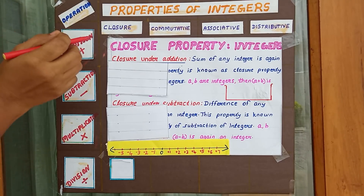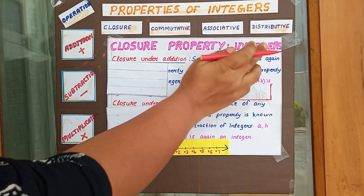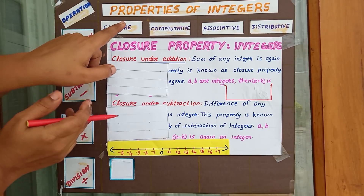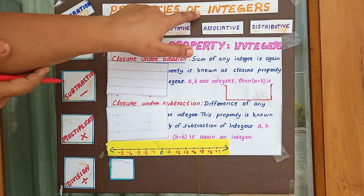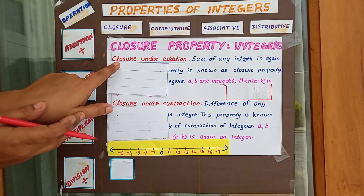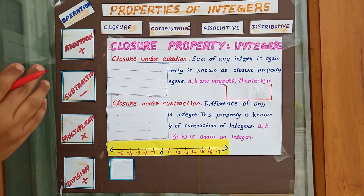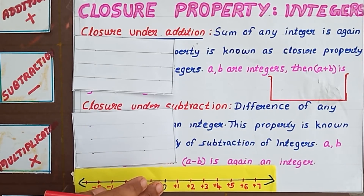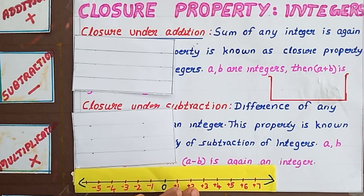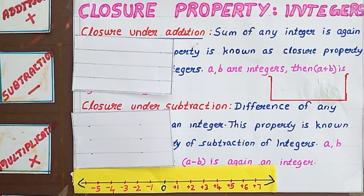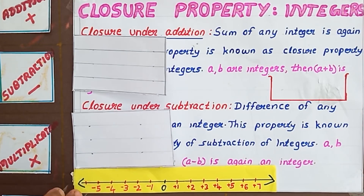We can start with closure property of integers. Closure under addition — does the integer set satisfy closure under addition? Do you remember what are the numbers in the integer set? This is the number line and I have marked integers on it: 0, +1, +2, +3, +4, +5, etc., and -1, -2, -3, -4, -5, etc. These are the numbers in the integer set.